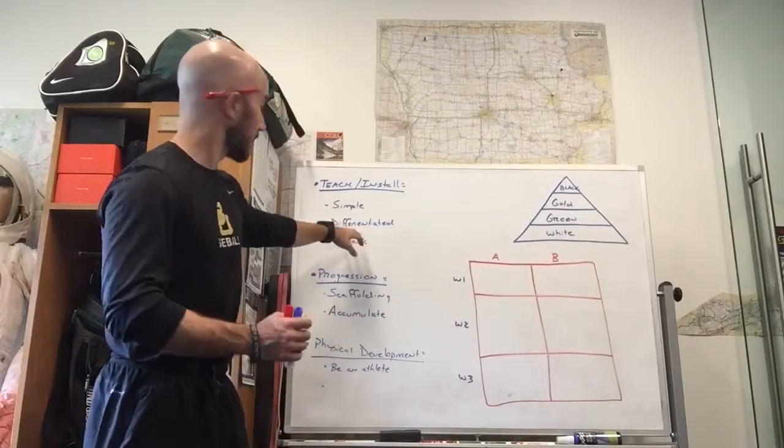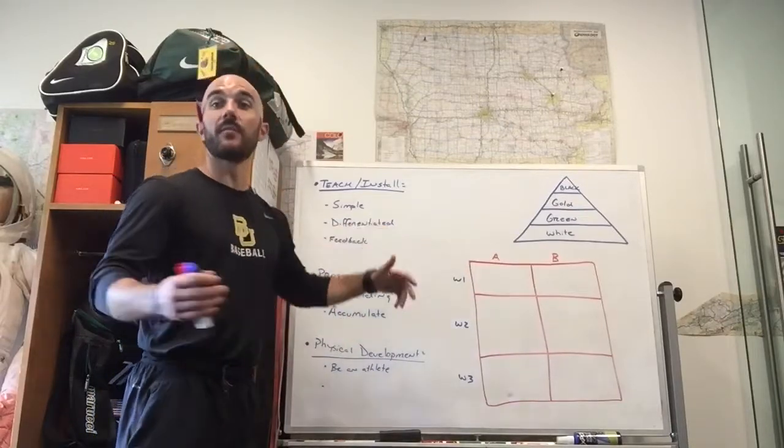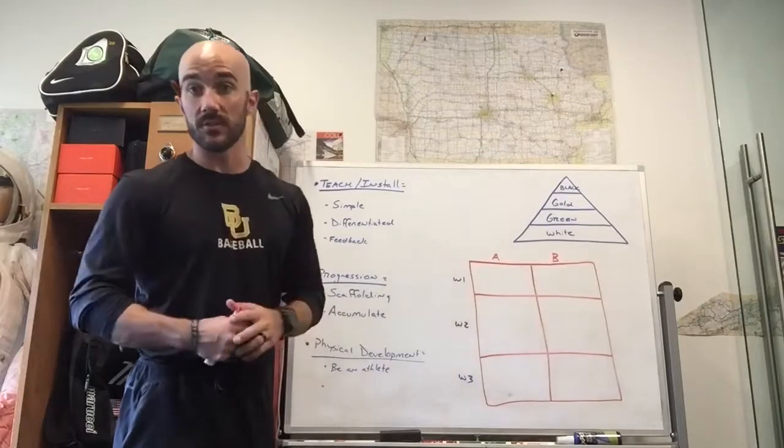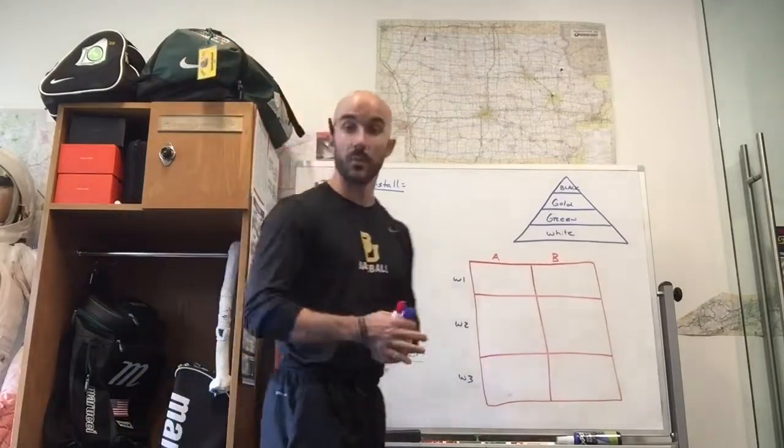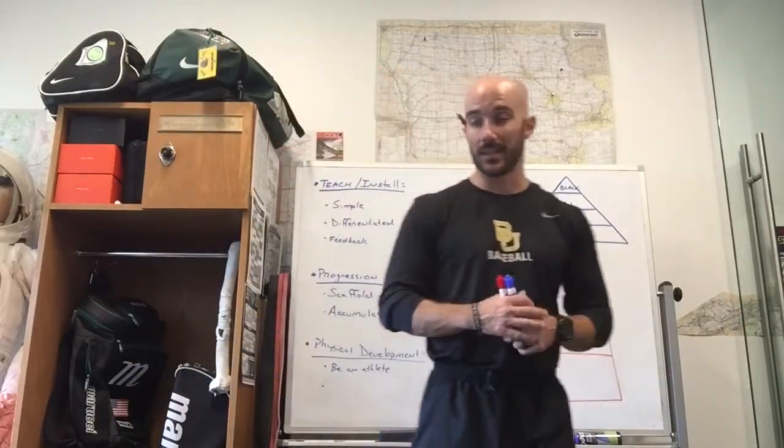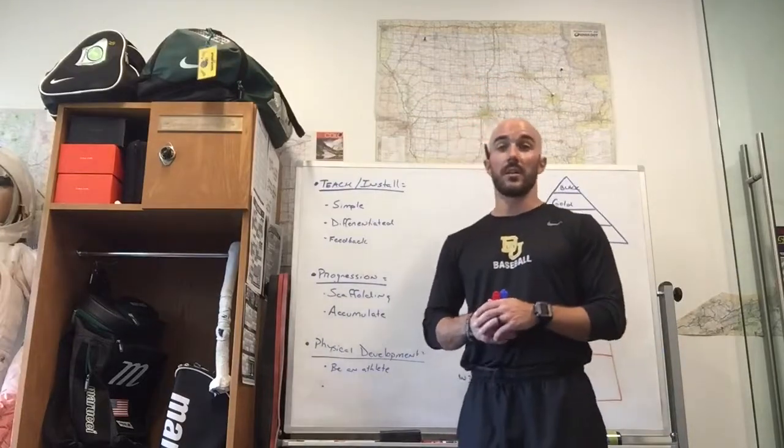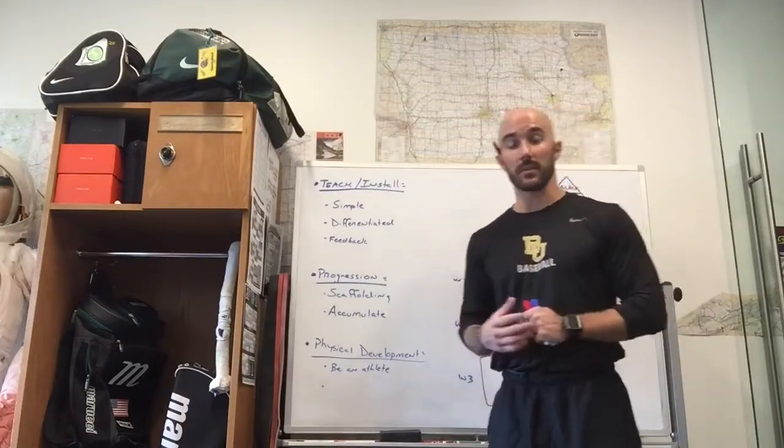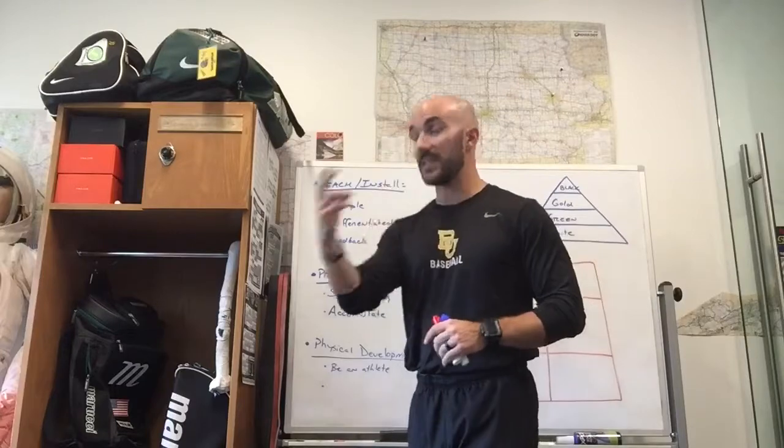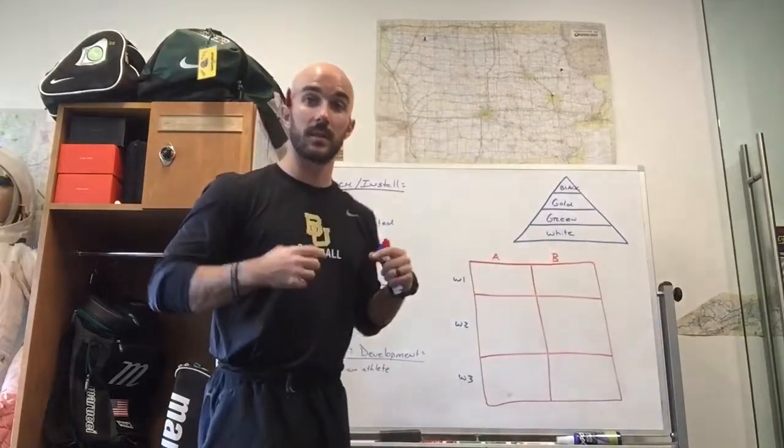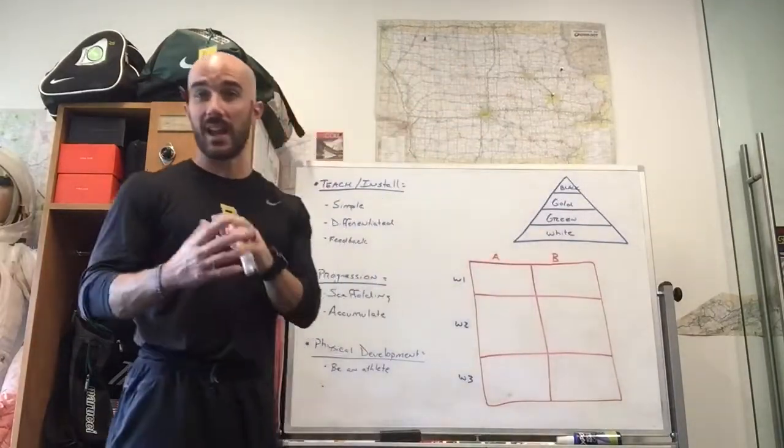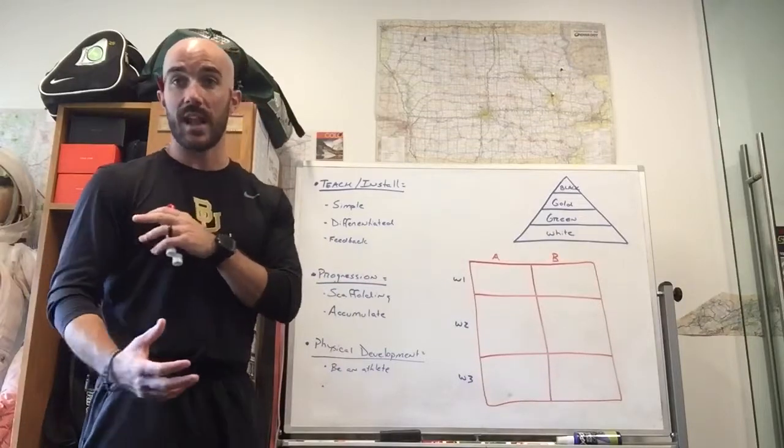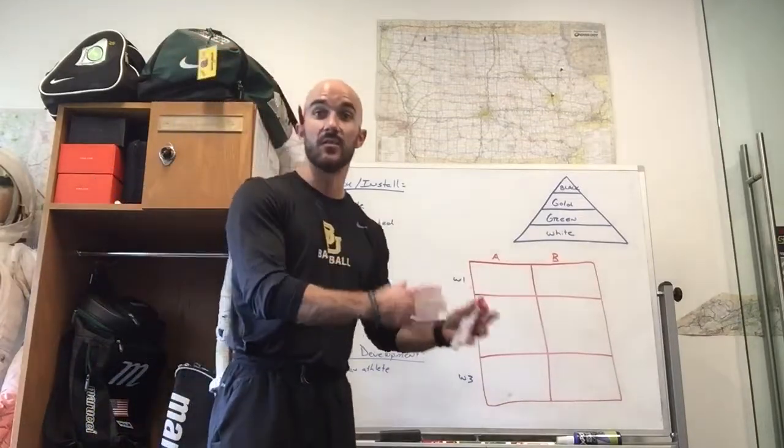The next thing is I want to keep instruction differentiated. So differentiated instruction is basically providing instruction or teaching to a bunch of different audiences. We have a ton of different types of learners. We have learners that see things and get it right away. We have learners that are auditory learners that need to hear things, and we have our psychomotor learners that actually have to get in the weeds and do it.